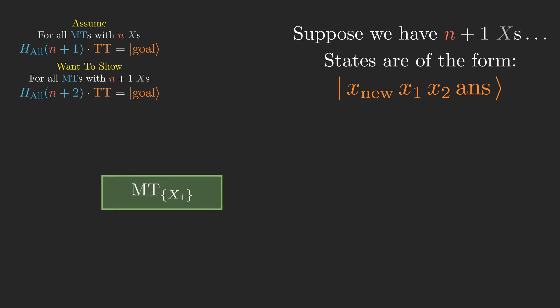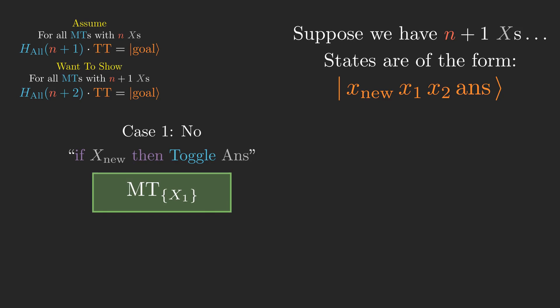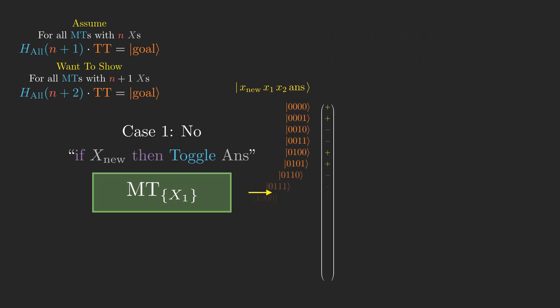We'll consider two cases. The first one is where there is not a line in mystery toggles that says if x new then toggle answer. To exemplify that, let's use this version of mystery toggles that operates on n plus 1 x's, x new and x1 through xn, and only has a line of code that says if x1 then toggle answer. This version of mystery toggles induces a truth table state tt and a corresponding goal state.